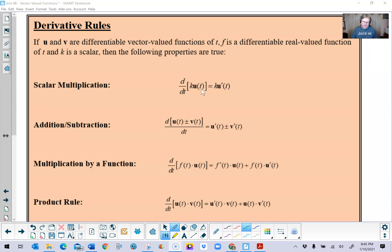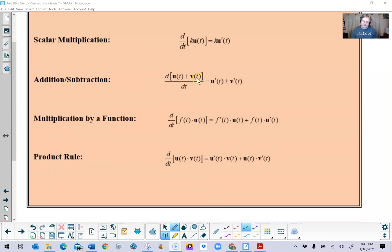Scalar multiplication exactly as you would have anticipated. You would just simply take the k out in front, take the derivative of the vector value function and you've got your answer. Addition subtraction just exactly again what you would probably have anticipated. You just take the two derivatives of your vector value functions and then throw your plus or minus in. Now if you're going to do the derivative of a multiplication problem by a function, you certainly can use the product rule here. Notice that f of t is the function, u is the vector, and you would just simply take the product rule the way that you always have taken.